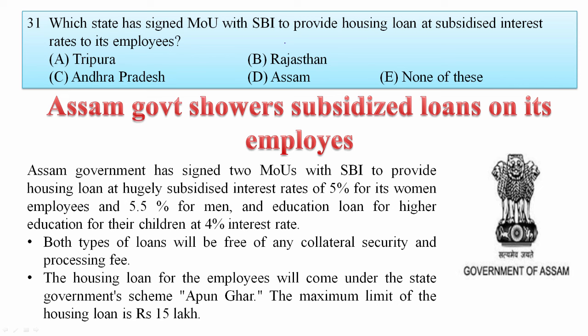Which state signed an MoU with SBI to provide housing loans at subsidized interest rates to its employees? Assam government signed an MoU with SBI to provide housing loans at a subsidized interest rate of 5% for women employees and 5.5% for men, and education loans at 4%. The housing scheme for employees comes under the state government scheme 'Appun Ghar', with a maximum housing loan limit of 15 lakh rupees. Your answer is Assam.